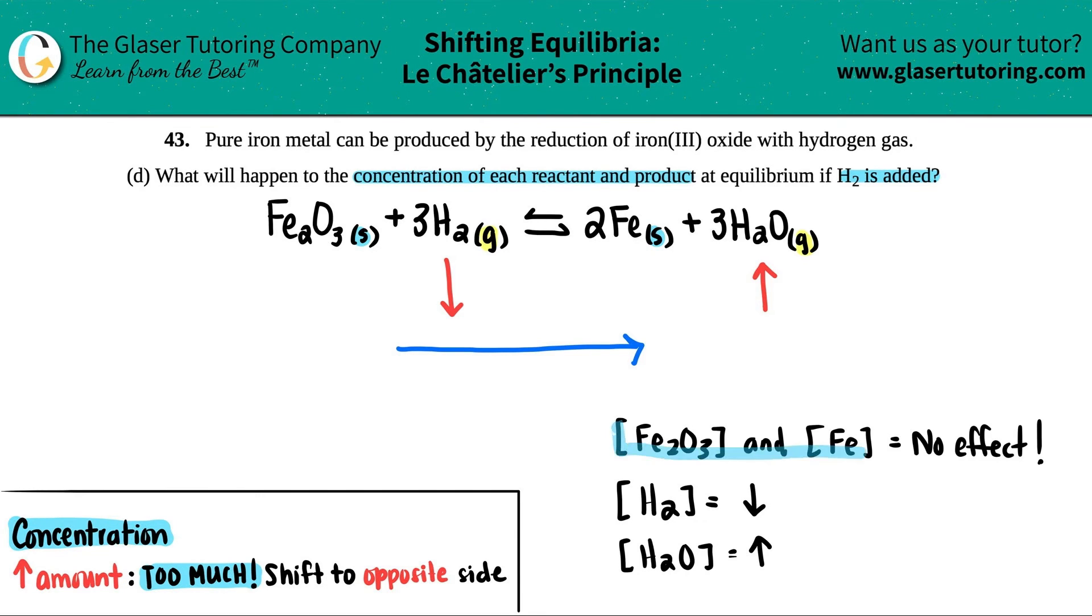So let me just box these off. These are basically your four answers to the question - they just wanted to know what would happen to the concentration of each reactant and product. So you'll decrease your H2, increase your H2O, and then for your two solids: no effect. But some of you might be saying, "Wait, wait, Christina,